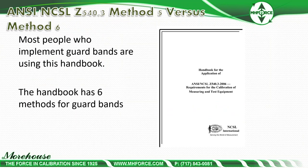Most people implementing guard bands use the NCSLI Z540.3-2006 handbook, which has six methods total for guard bands. This handbook is free for NCSLI members — you can download it by logging into My NCSLI. I highly recommend becoming an NCSLI member, as you get access to all their documentation including RPs, laboratory management documents, RP-12, and risk management documents. Very good organization.